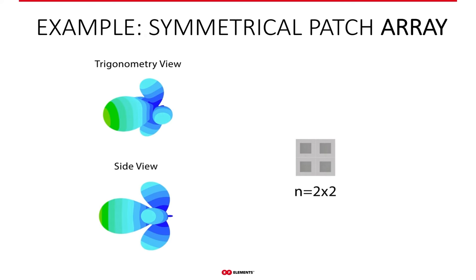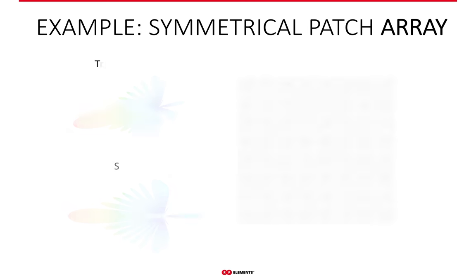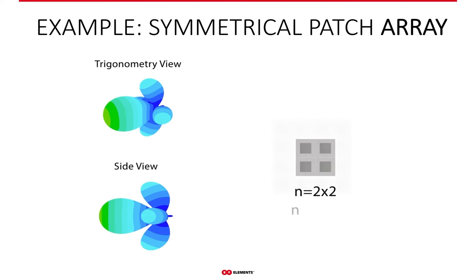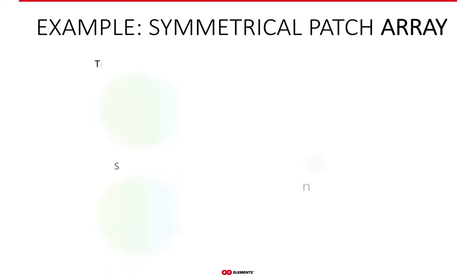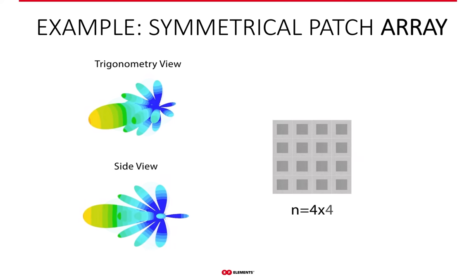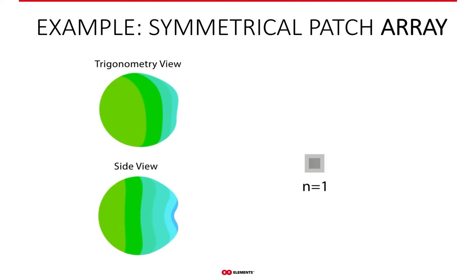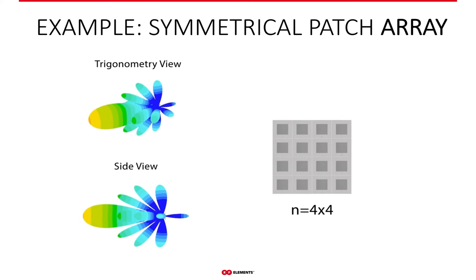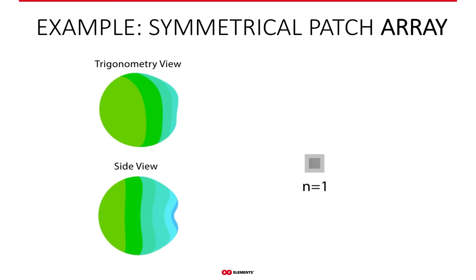The array principle works similarly for two-dimensional arrays: adding more patches shrinks the main beam width in both azimuth and elevation planes simultaneously, and the same applies to side lobes. These simulation results in EM software show how side lobes progress as the array size increases. If patches are stacked only horizontally, the radiation pattern narrows in the azimuth plane while elevation remains unchanged — and vice versa.